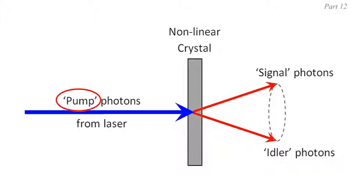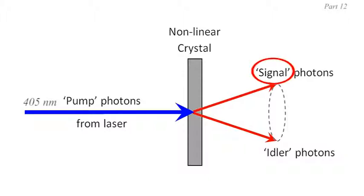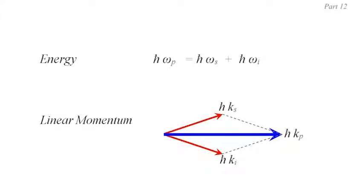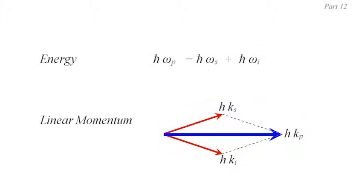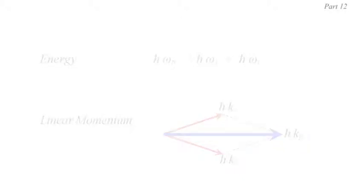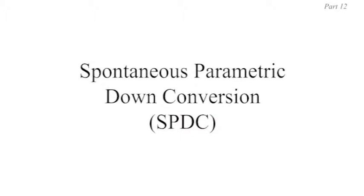In the experiments we're concerned with, the input beam — known as the pump laser — will be in the ultraviolet, around 405 nanometers in wavelength, and the two exiting beams, known as the signal and the idler, will be in the infrared at twice that wavelength, which means half the frequency and hence half the energy of the pump. Energy and momentum are each conserved in this down conversion — a scalar addition for energy and a vector addition for linear momentum. As for the conservation of angular momentum, you'll need to explore the theory of spontaneous parametric down conversion to be comfortable with that.